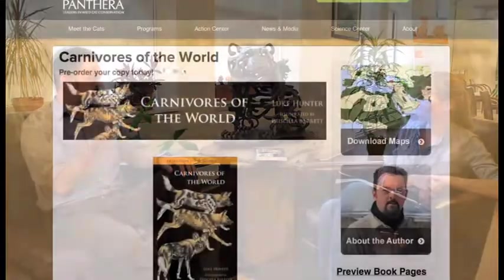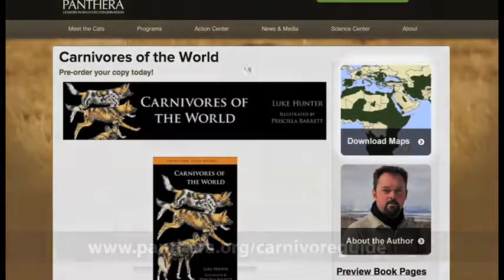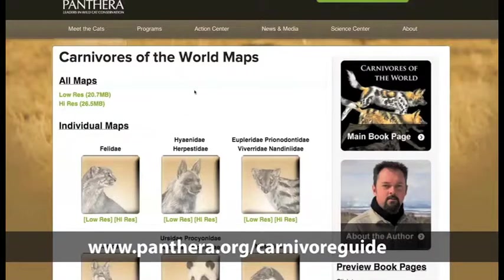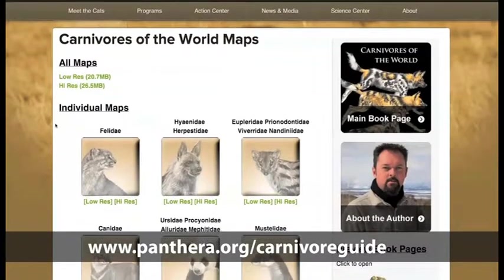So unlike a lot of field guides though, this one in particular doesn't include maps. So what we've done, maps don't appear in the book, but we've made available new maps online. So people can go to Panthera's website and actually download all the maps. And the advantage of that is we'll be able to continually update them. So as new information comes in about these species from surveys and activities around the world, we can update them.